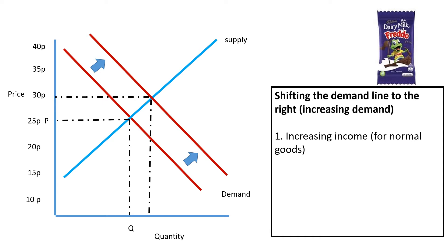Factor one: increasing income for normal goods. If we all have more money, we will increase the demand for goods. So if I have more disposable income, I will go on holiday more, buy more clothes, eat more Freddos, go to restaurants more. Increasing income for normal goods should make the demand curve shift to the right.